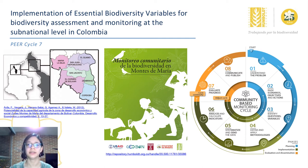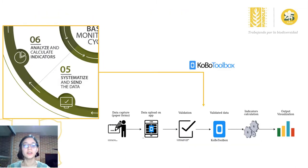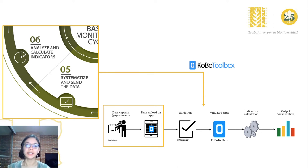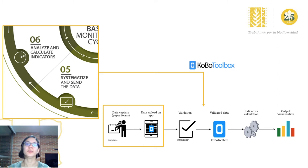We've been working on a pipeline for data capture and analysis, which are part of steps five and six of the cycle. For this pipeline, we have two options: people can start with data captured in paper forms or directly with a smartphone or tablet. Data will then be uploaded with an app that makes it available for analysis. In this case, we chose the KoBoToolbox, which is an application that allows us to upload data easily from any device or a computer.